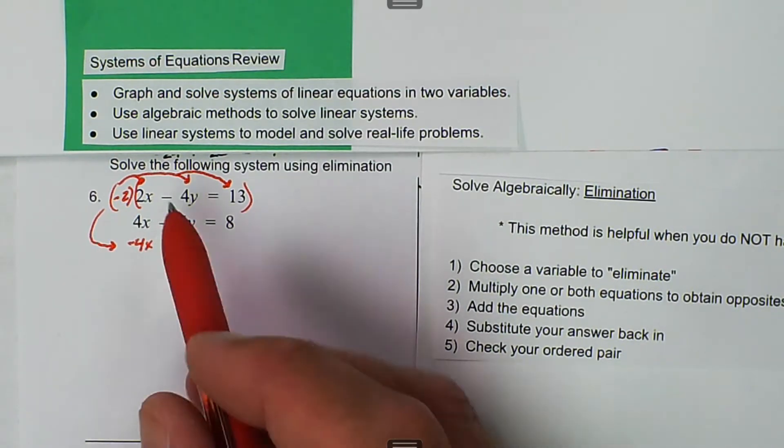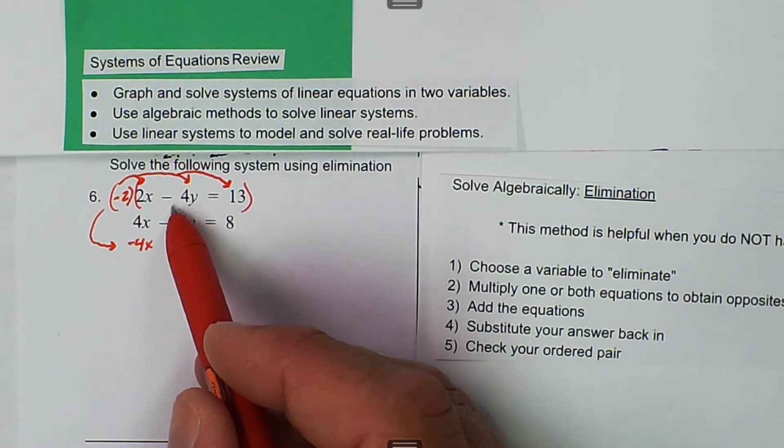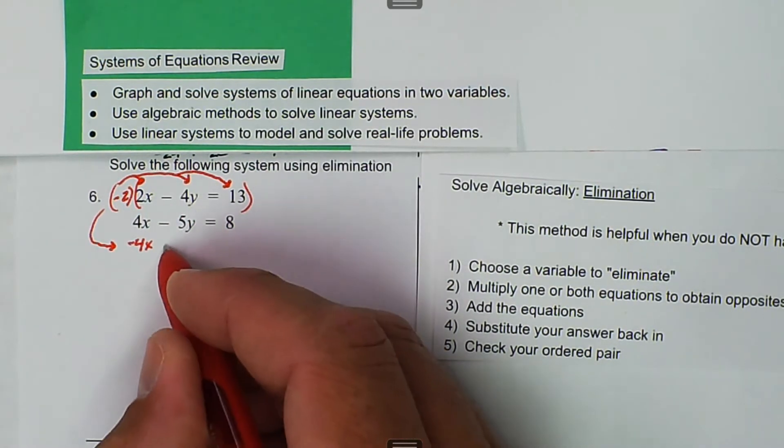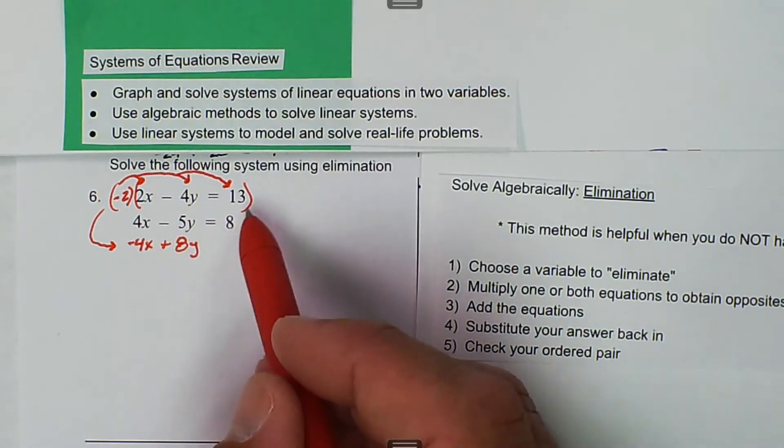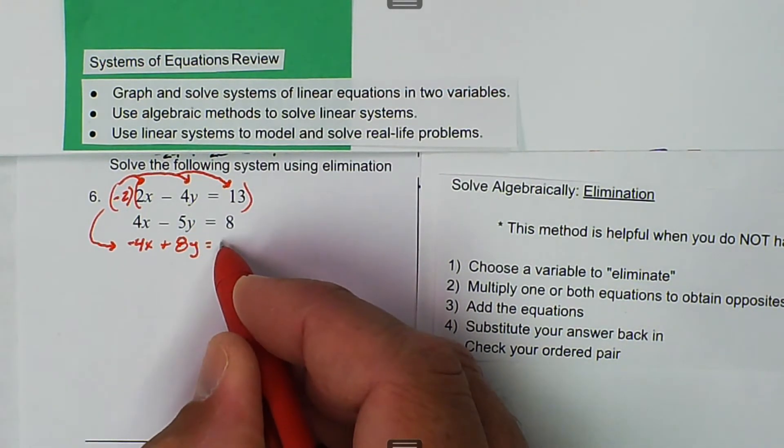Because we want to have a positive 4x and a negative 4x, because those will eliminate each other. Negative 2 times negative 4y is positive 8y, and negative 2 times 13 is negative 26.